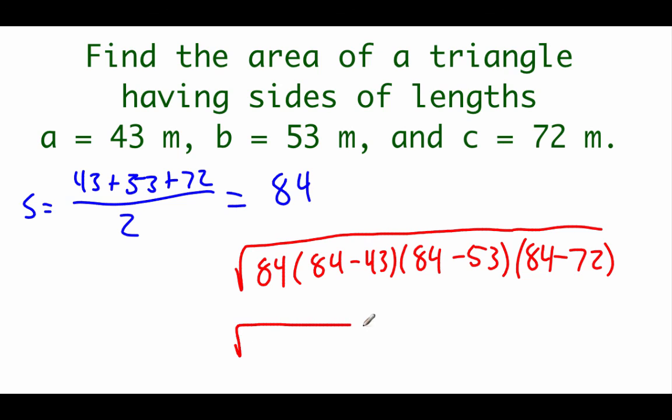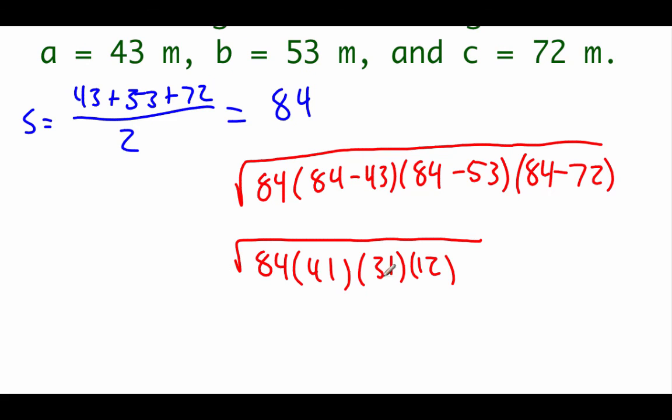If we simplify some things down underneath the radical, we've got 84 times 41 times 31 times 12, and if we were to type that into our calculator, we should get 1131.89 meters squared.